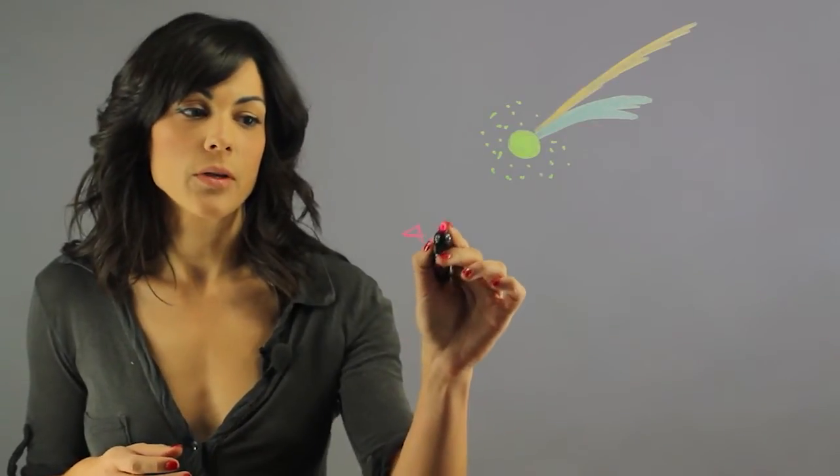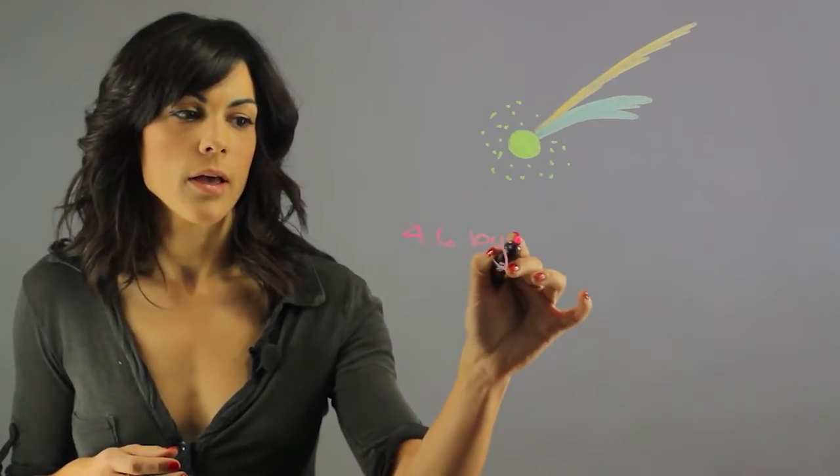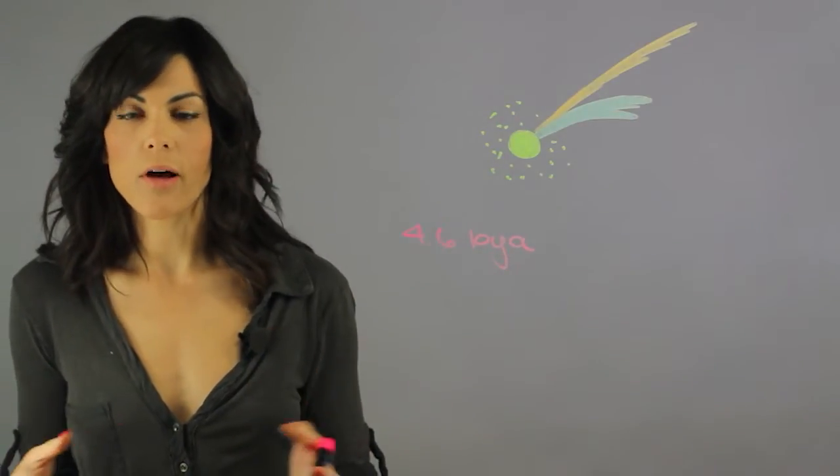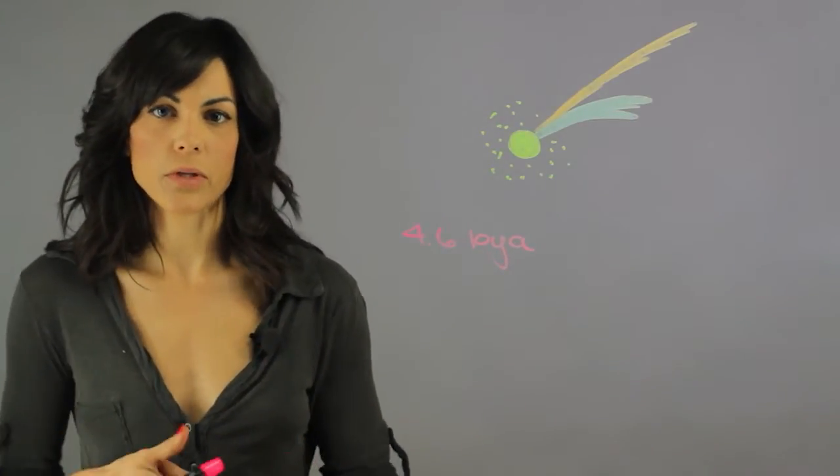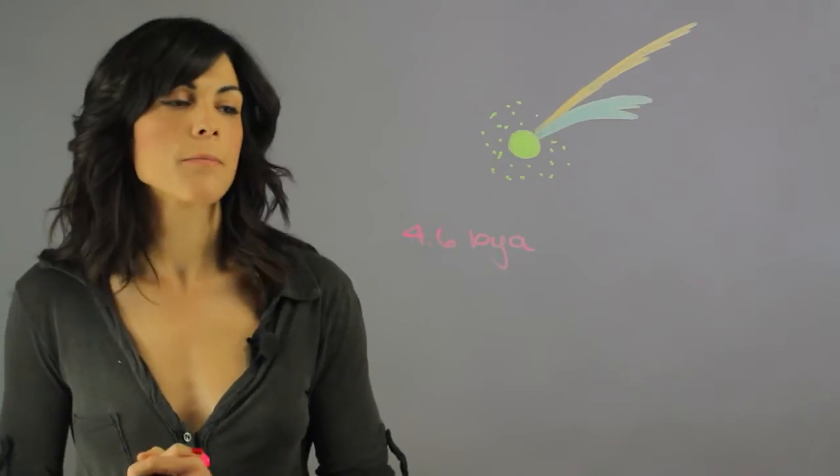Comets are a really important part of the solar system. They've been around since the beginning of the solar system, 4.6 billion years ago. I will briefly explain what comets are and what they're made out of, and then I will talk about the importance for science.